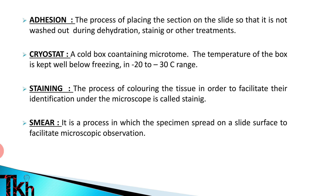The next definition is staining. Staining is the process of coloring the tissue in order to facilitate its identification under the microscope. The next definition is smear — it is a process in which the specimen is spread on the slide surface to facilitate microscopic observation, so that we can easily see the tissue under microscopic examination.